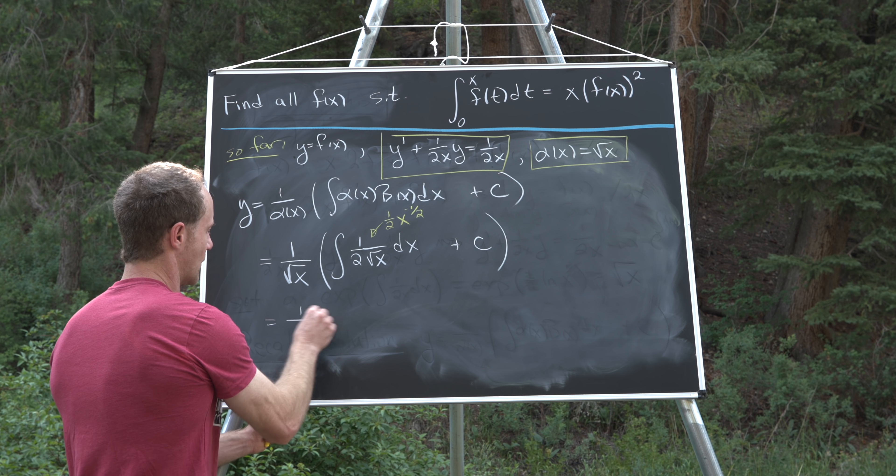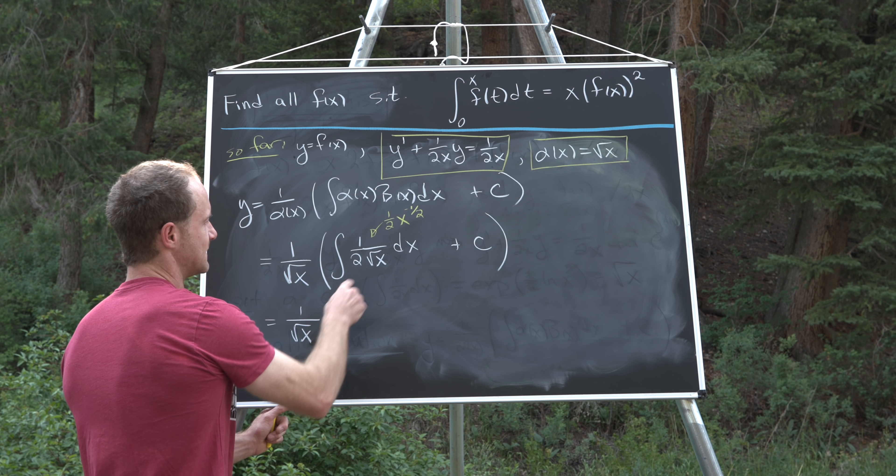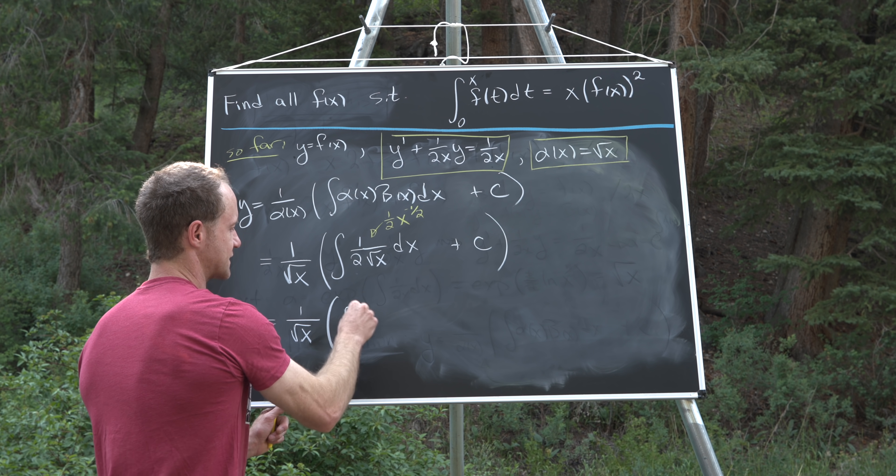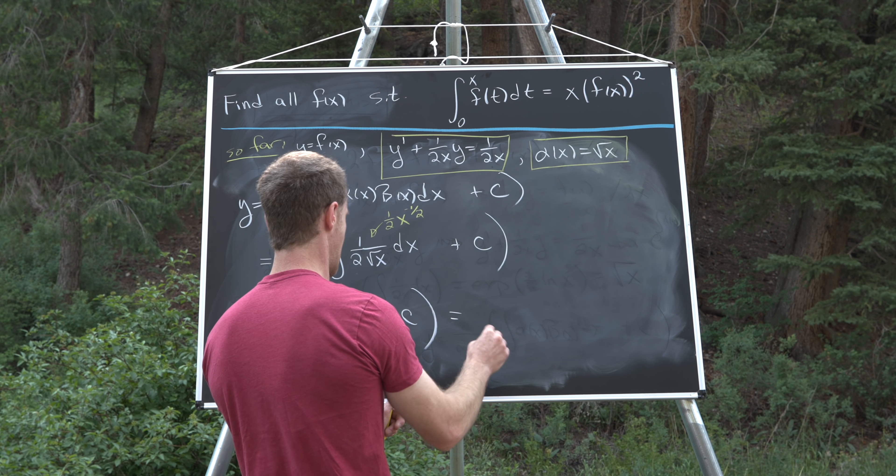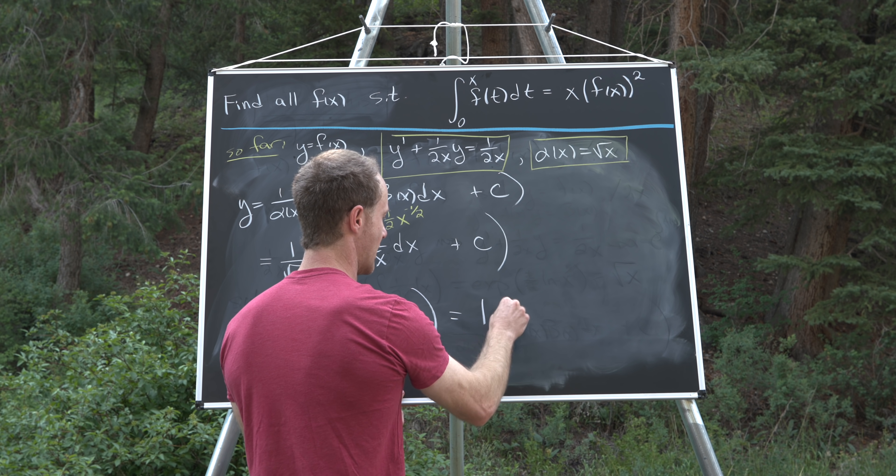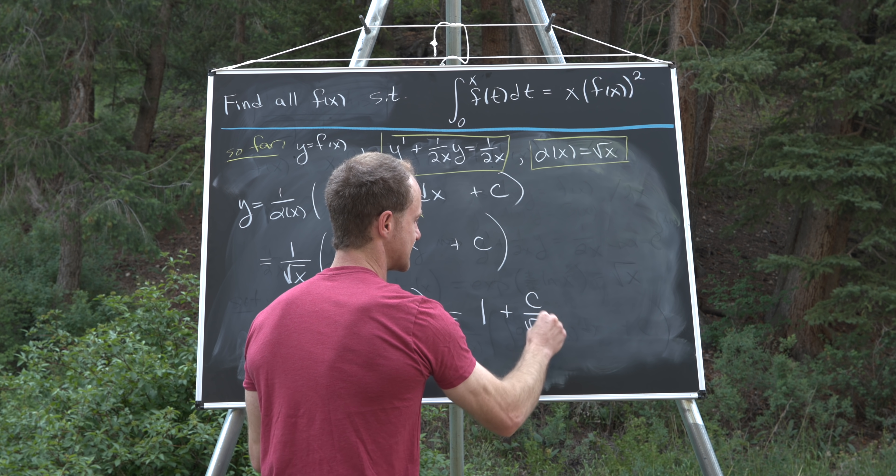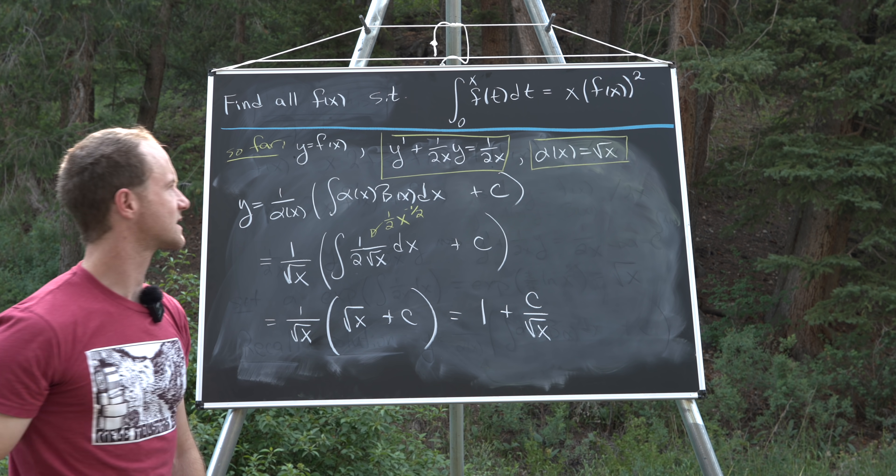So let's see, we've got 1 over the square root of x. Taking the antiderivative, we'll have the square root of x plus some constant. But then multiplying this through, we see we get 1 plus some constant over the square root of x.